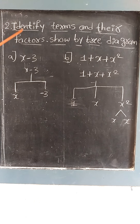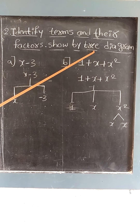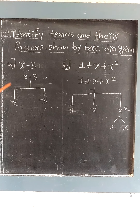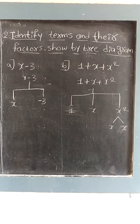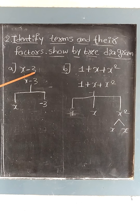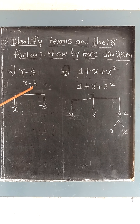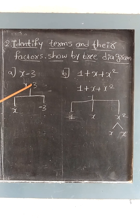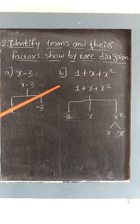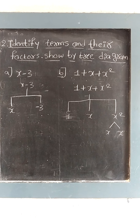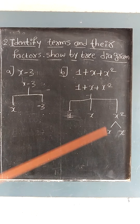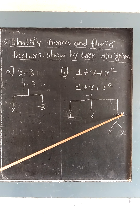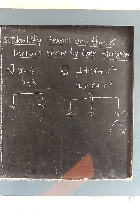The second question is: identify terms and their factors and show them by tree diagram. We have to separate the terms and factors and show them in a tree diagram. First question: x minus 3. Here x is a term and 3 is a factor. In the tree diagram we write x here and minus 3 here, and x is a factor. For the second one, 1 plus x plus x squared, we have three terms: 1, x, and x squared. We can further separate x squared as x times x. This is how we show them in a tree diagram.